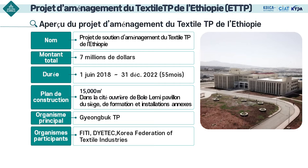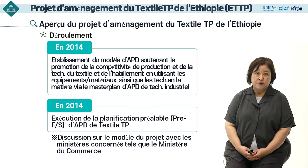La durée totale du projet est de 2018 à 2022. Le pavillon du siège et de l'usine pilote, le pavillon pour la formation et le centre d'essai et d'analyse sont situés à la fois dans le site. L'organisme principal qui mène le projet est le Kyongbuk Technoparc. Les organismes participants comprennent l'Institut de recherche FITI, l'Institut de recherche Dietech et la Fédération de l'industrie textile, qui sont les plus remarquables de Corée dans le secteur textile.